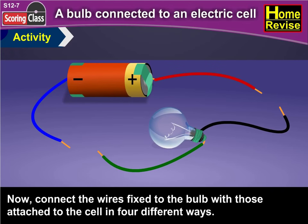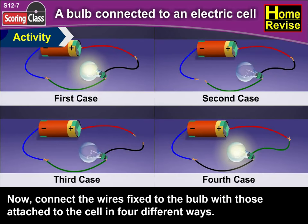Now, connect the wires fixed to the bulb with those attached to the cell in four different ways.